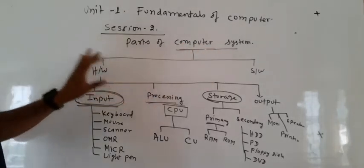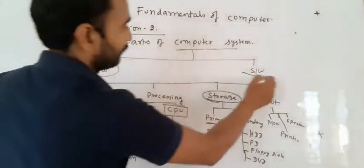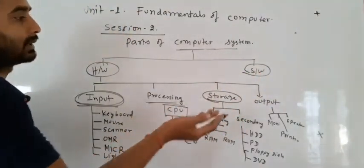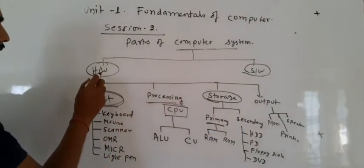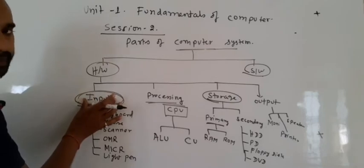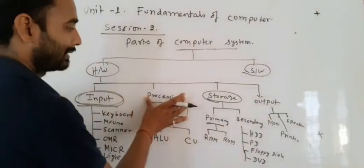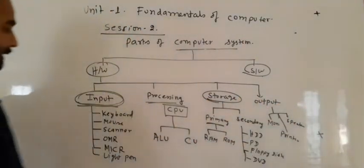Computer system is classified into hardware and software. In the next session we learn about software. The first part is hardware. Hardware is further classified into four categories: input devices, processing devices, storage devices, and output devices.